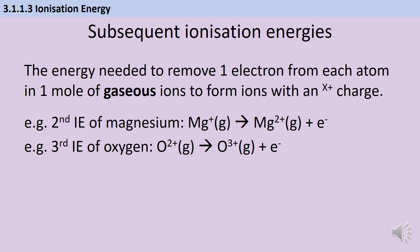There aren't just first ionization energies — there are second and third, and as many as you have electrons in an atom. Each ionization energy describes the removal of only one electron per atom. For the second ionization energy of magnesium, we start with a mole of Mg+ ions and remove one electron to make Mg2+ ions. For the third ionization energy of oxygen, we start with O2+ ions and remove one electron to make O3+ ions. Both use gaseous state symbols throughout.